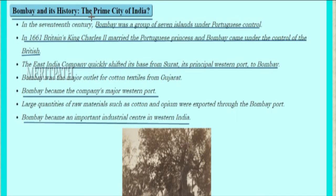In the 17th century, Bombay was a group of seven islands under Portuguese control. In 1661, Britain's King Charles II married the Portuguese princess, and Bombay came under British control. The East India Company quickly shifted its base from Surat, its principal western port, to Bombay. Bombay was a major outlet for cotton textiles from Gujarat and became the Company's major western port. Large quantities of raw materials such as cotton and opium were exported through the Bombay port.